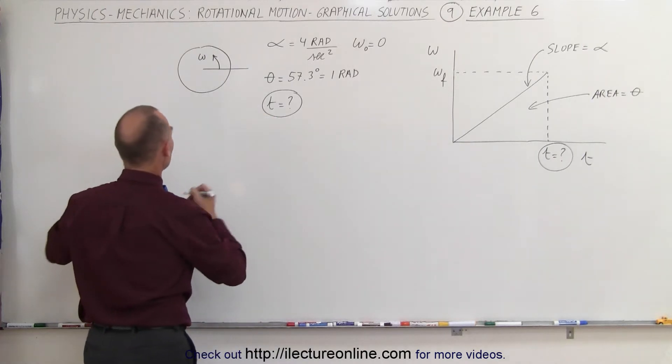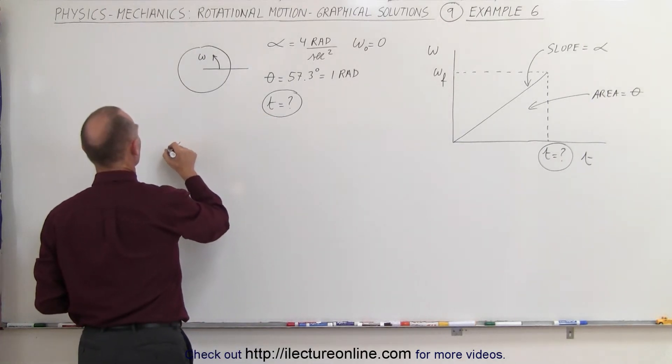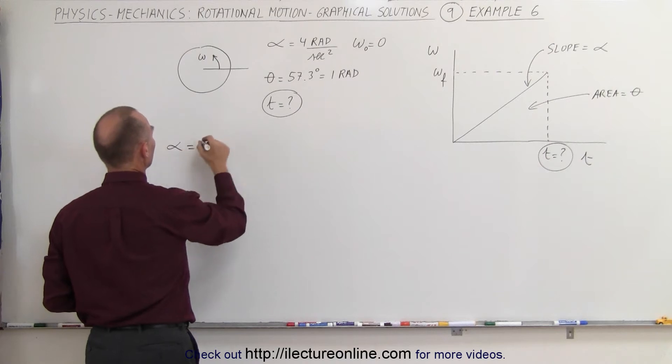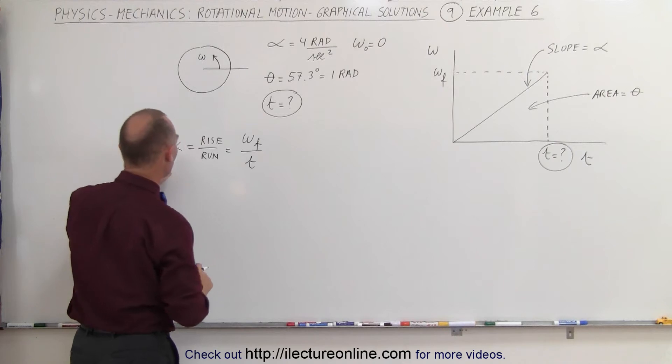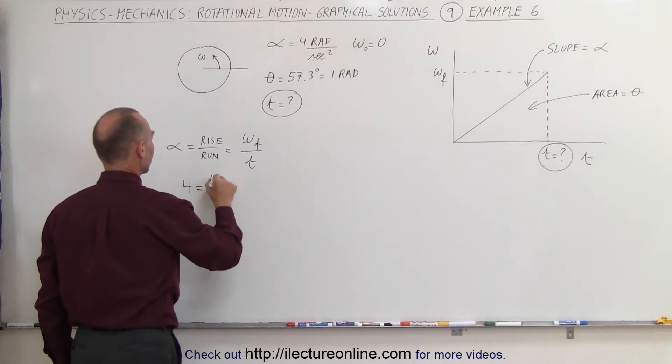We know the equation for the slope is as follows. The slope, which is the angle of acceleration, which is equal to the rise divided by the run, is equal to a rise of omega final, and a run of t. Those are the two unknowns, and since we know alpha, we can say that four equals omega final divided by t.